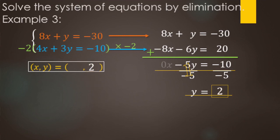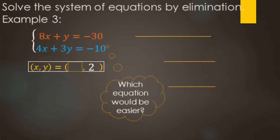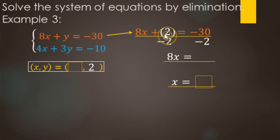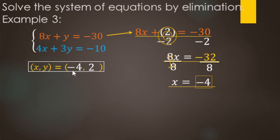Now we solve for x. We choose the easier equation — the top one, where y has no coefficient, meaning one less multiplication. We replace y with 2: 8x plus 2 equals negative 30. Undo plus 2 with minus 2 to both sides: 8x equals negative 32. Divide by 8: negative 32 divided by 8 is negative 4. The x value is negative 4. So negative 4, positive 2 is the ordered pair that makes both equations true.